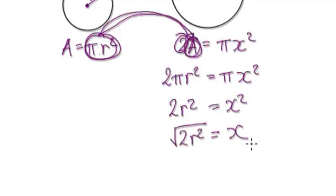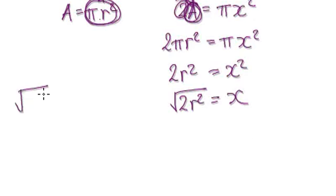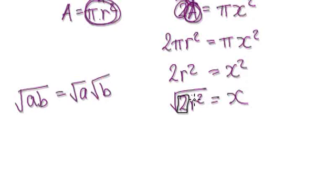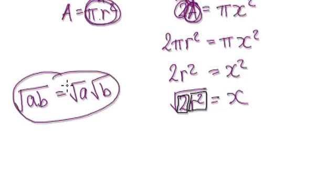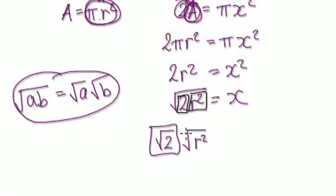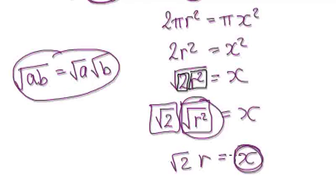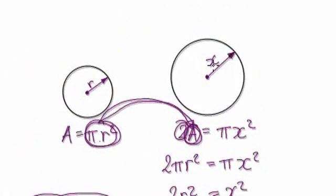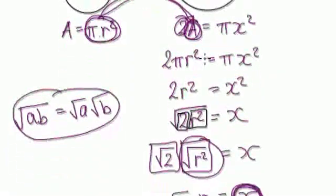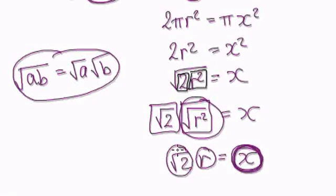Square rooting both sides gives us the square root of 2r squared. From our section on indices, remember that the square root of ab is the same as the square root of a times the square root of b. So imagine one block as root 2, and another block as the square root of r squared. The square root of r squared is just r, and the other part is root 2.